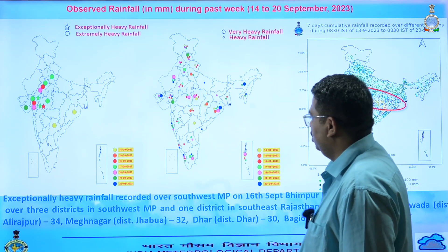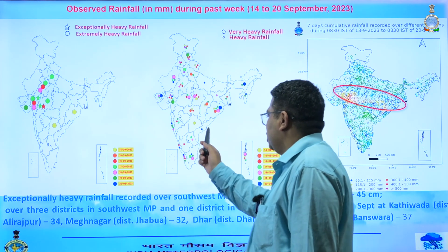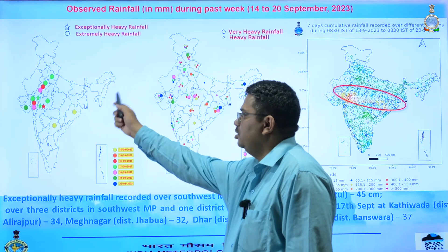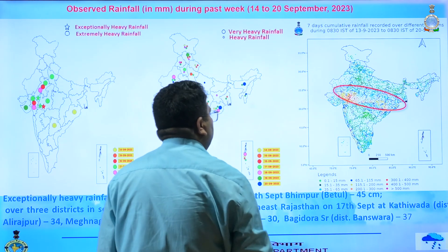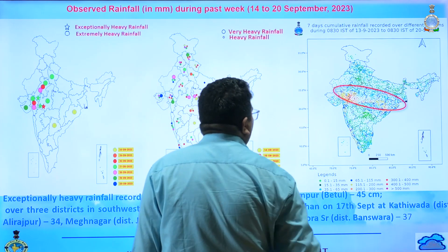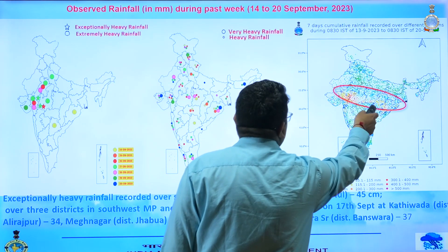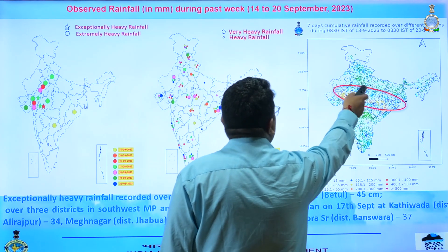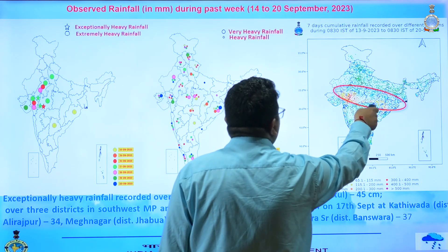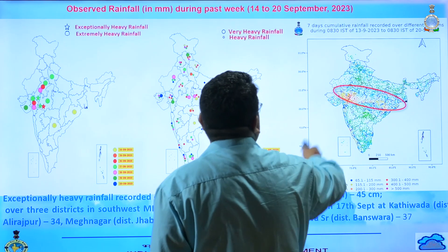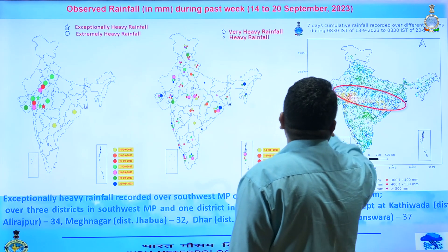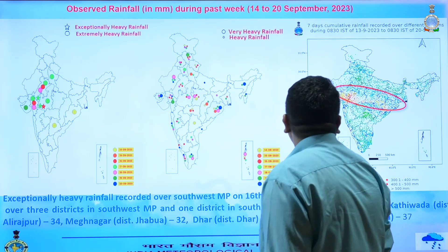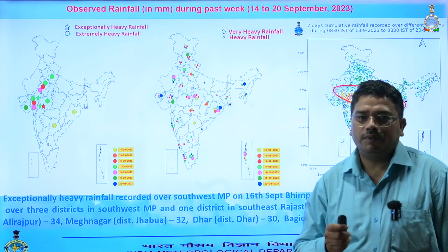One or two incidents of heavy rainfall were also observed over Rayalaseema, south interior Karnataka and Tamil Nadu. So these are the locations of heavy to very heavy and extremely heavy rainfall. This is the overall light rainfall to extremely heavy rainfall distribution. You can see in this red circle the main zone where heavy to very heavy rainfall with extremely heavy rainfall was observed. Otherwise, light to moderate rainfall over many parts of the country was observed, except some less rainfall over Ladakh and western Rajasthan.